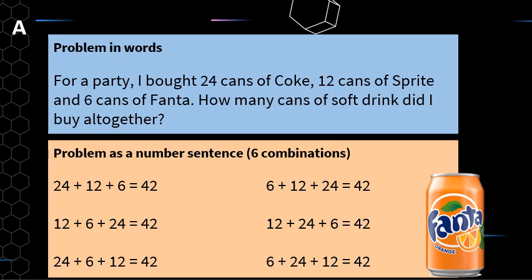For a party, I bought 24 cans of Coke, 12 cans of Sprite, and 6 cans of Fanta. How many cans of soft drink did I buy altogether? The word 'altogether' is giving us a hint that this is an addition problem — we want to find out how many more cans of soft drink I ended up with after going to the shops.